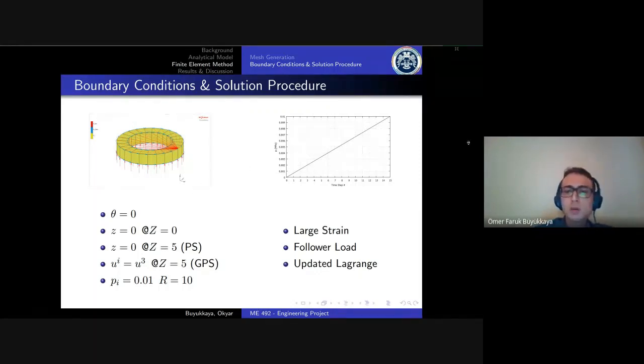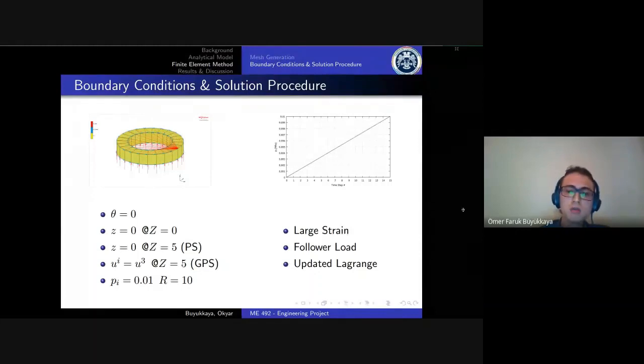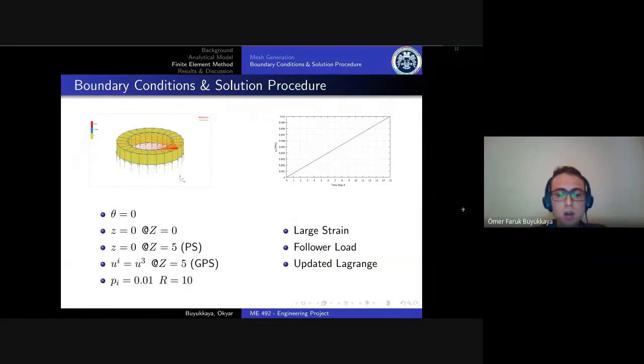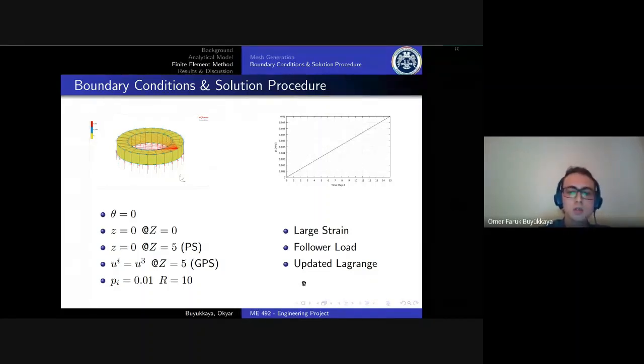Let me talk about the solution procedure. Because we are conducting a large strain analysis, we must turn on the follower load option because the pressure area will increase and this may cause decrements in our distributed load. We use updated Lagrangian formulation instead of total Lagrangian.